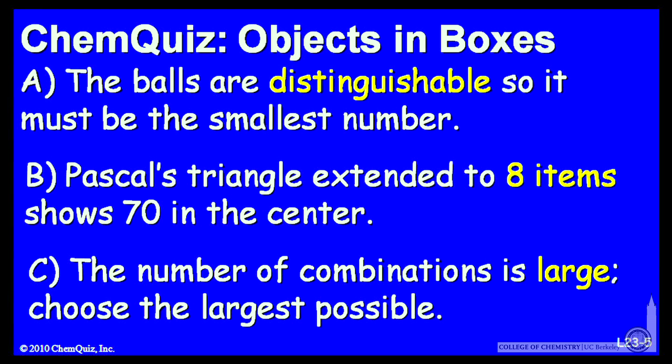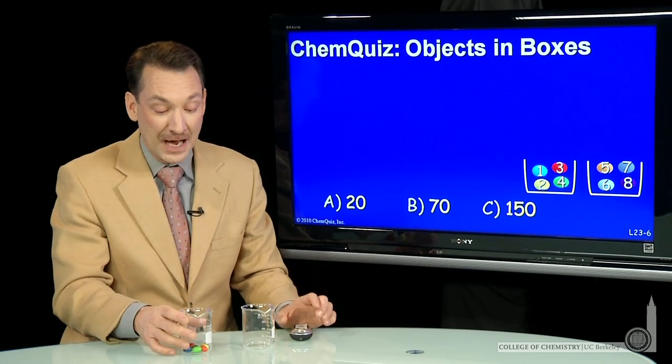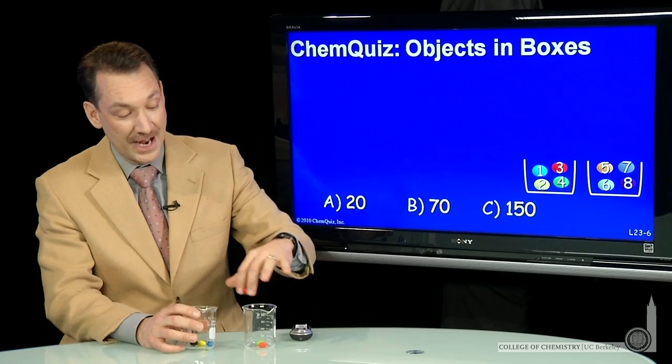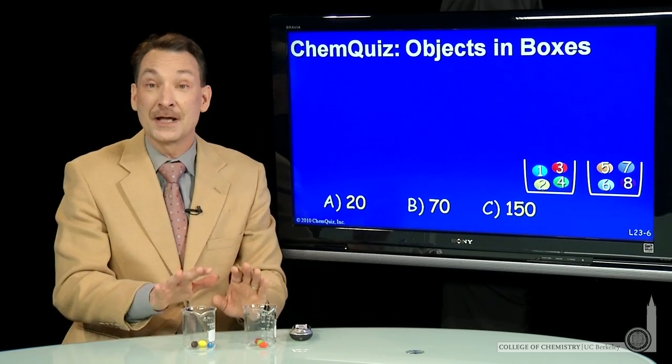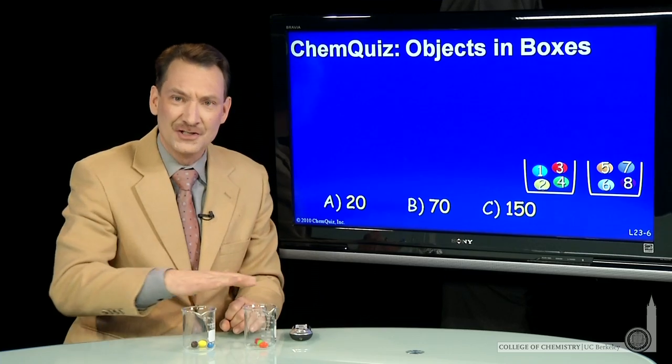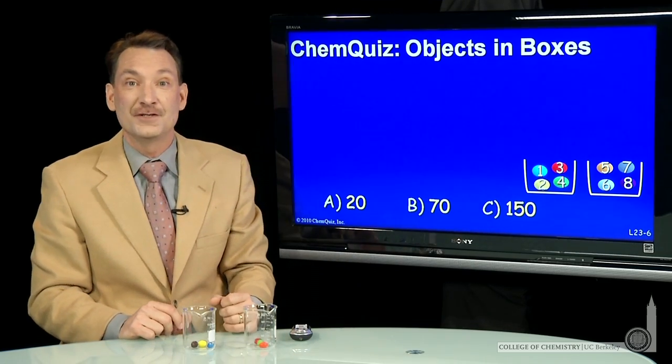Think about those three explanations and make another selection. We're talking about distributing distinguishable objects between two possible boxes. So here I have some objects I'm distributing between two boxes. How many ways can I arrange them so that they're equally distributed, or in this case, four in each box?